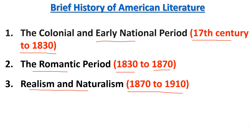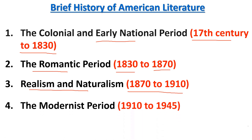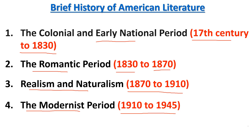The fourth period is the Modernist Period. The time duration of the Modernist Period is from 1910 to 1945. The important literary figures of this period include F. Scott Fitzgerald, Ernest Hemingway, William Faulkner, Robert Frost, and Eugene O'Neill. These writers contributed significantly to American literature through their writings, books, and creative works.